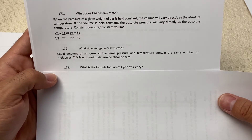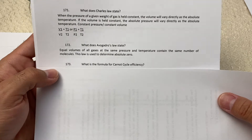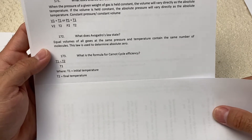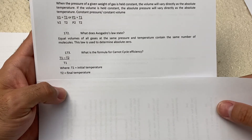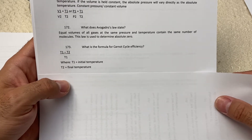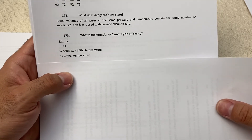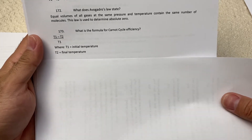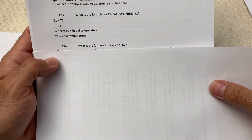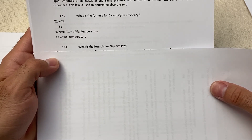Third question: what is the formula for Carnot cycle efficiency? The formula is T1 minus T2 divided by T1, where T1 is the initial temperature and T2 is the final temperature.